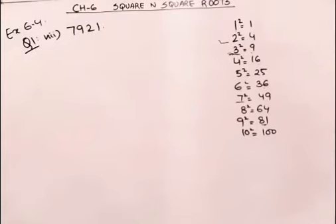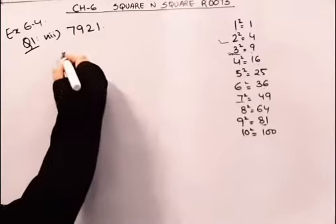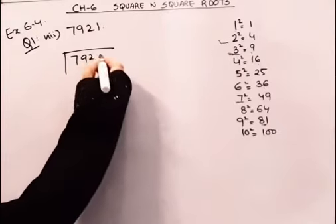Now the 8th part of the first question is 7921. Iska square root kaise nikaalengi? We move towards the left hand side.